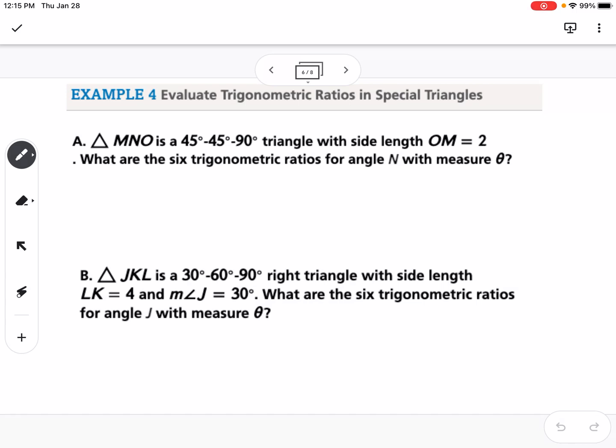Example four, in the written notes I went through one, and in the video I'm going to go through both. It's talking about special right triangles, which hopefully you learned a bit about in geometry. Triangle MNO is a 45-45-90 with side length OM equal to 2. What are the six trig ratios for angle N with measure theta? Angle N is our 45-degree angle.